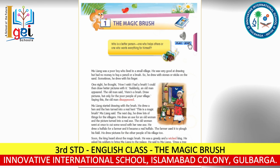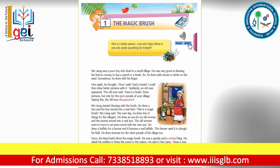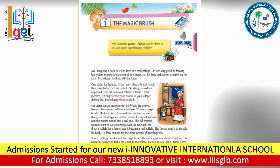Ma Liang started drawing with the brush. He drew a hen and the hen became real. Then he drew lots of things for the villagers — he drew an axe for the old woman which became real, and then he drew a buffalo for the farmer and the buffalo became real. The farmer used it to plow his field.